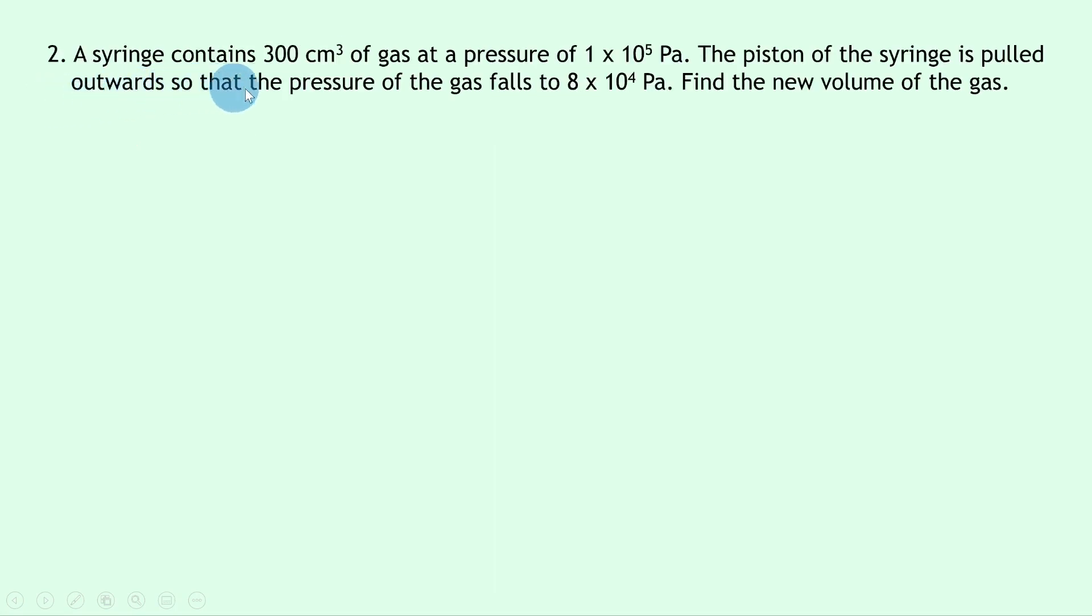Question two says a syringe contains 300 centimeters cubed of gas at a pressure of 1 times 10 to the 5 pascals. The piston of the syringe is pulled outwards so the pressure of the gas falls to 8 times 10 to the 4 pascals. Find the new volume of the gas. So this is the same as asking us for the final volume, i.e. V2.